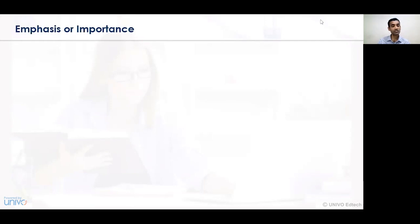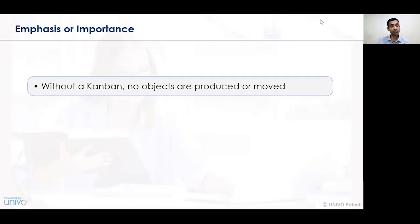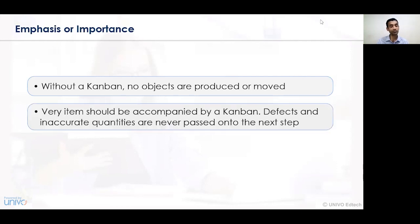The biggest importance of Kanban is that without a Kanban, no objects are produced or moved. In order to create a sequence of certain activities, Kanban is very essential. Every item should be accompanied by a certain Kanban, and defects and inaccurate quantities are never passed to the next step. If there is a defective activity, those activities are not moved if there is no Kanban applicability — helping to identify defect activities and prioritize them.